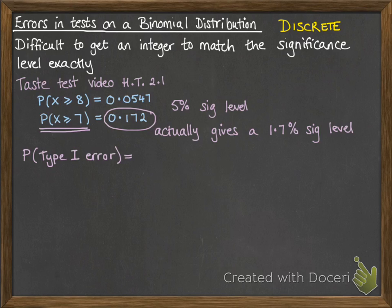The probability of a type 1 error means the probability that we rejected it, given that the null hypothesis was true. So the probability of this actually happening is 0.172, that's our actual significance level.